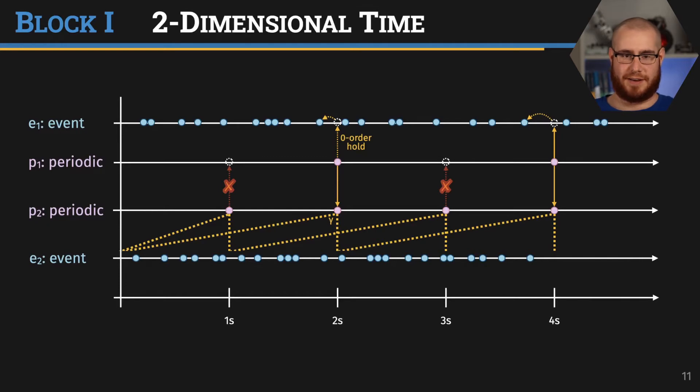If we still wanted to access such a value, even though there is no value, we would need to have an asynchronous lookup. Most prominently, this is necessary if you want to access an event-based stream from a periodic stream. For example, if P1 accesses E1, it needs to use an asynchronous lookup like a zero-order hold. In this case, it checks what is the latest value of E1 we have and uses this one. This access is fallible because if E1 has never produced a value, there is no value to sample from. Such an asynchronous lookup needs to provide a default value if the access fails.